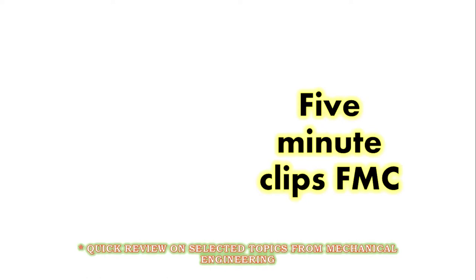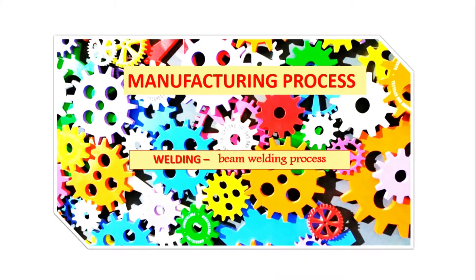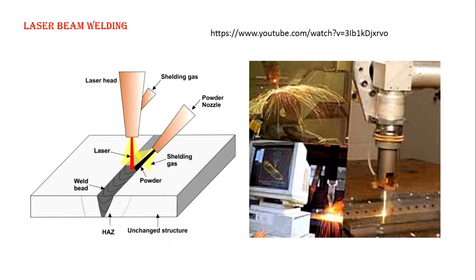Welcome students. Today we will talk about the beam welding process. There are two types of beam welding processes available: one is laser beam welding and another one is electron beam welding. A beam is a concentration of light — when it falls on a surface it creates temperature, and that temperature is good enough to melt the material, which we use to join two metal pieces.